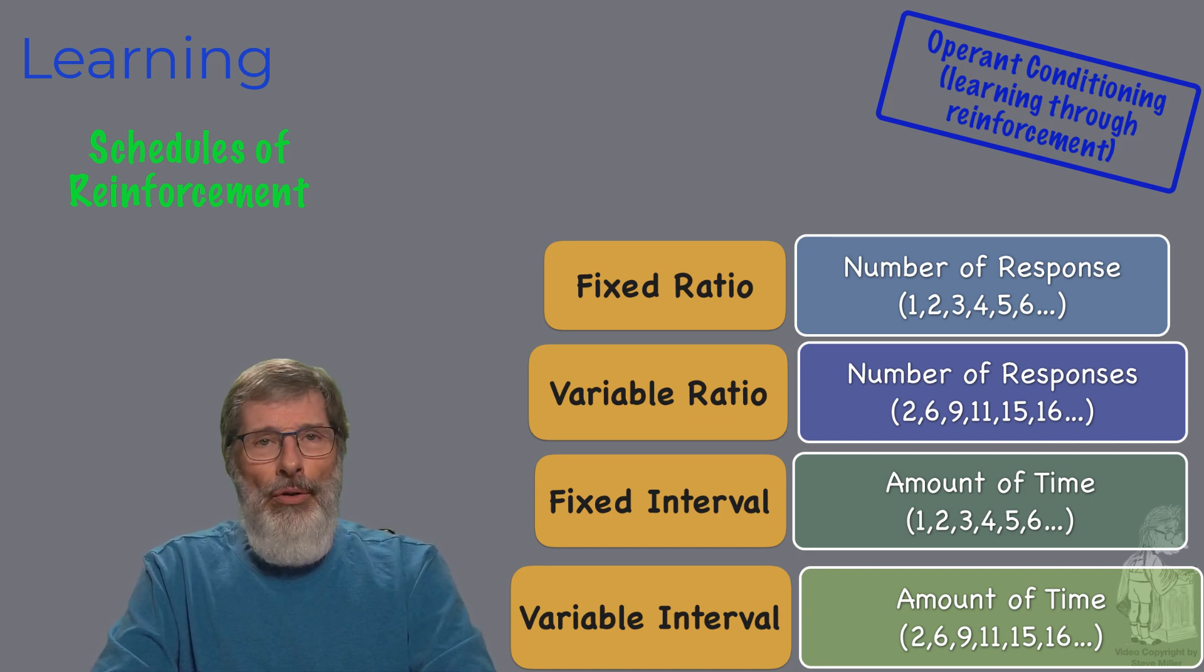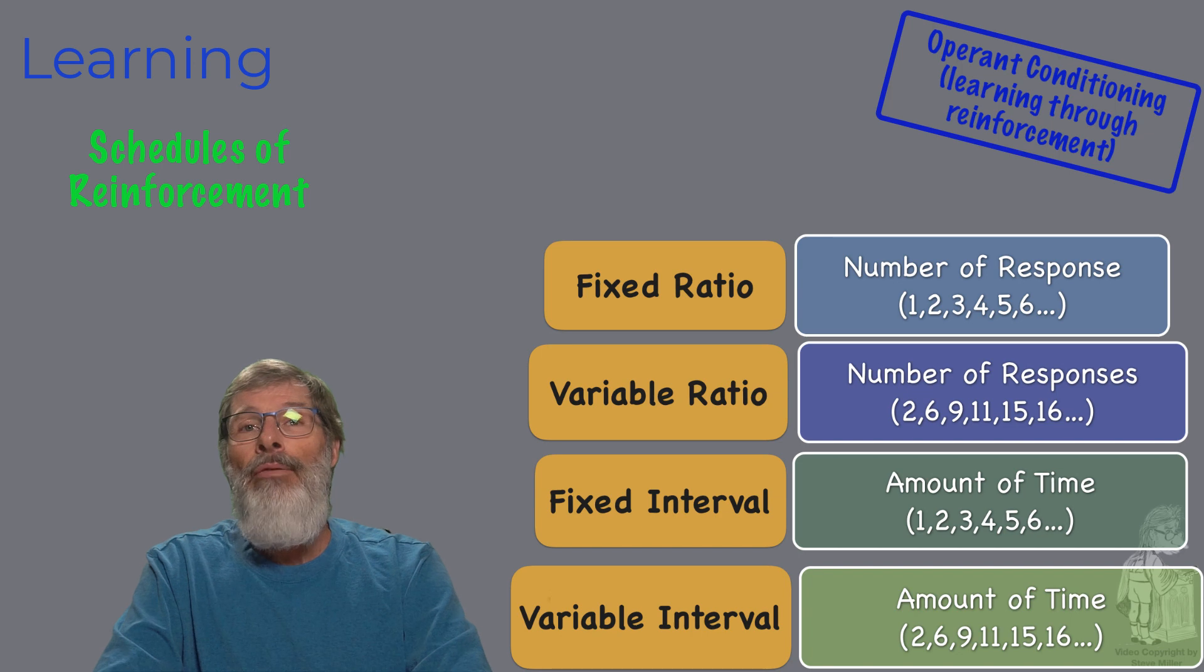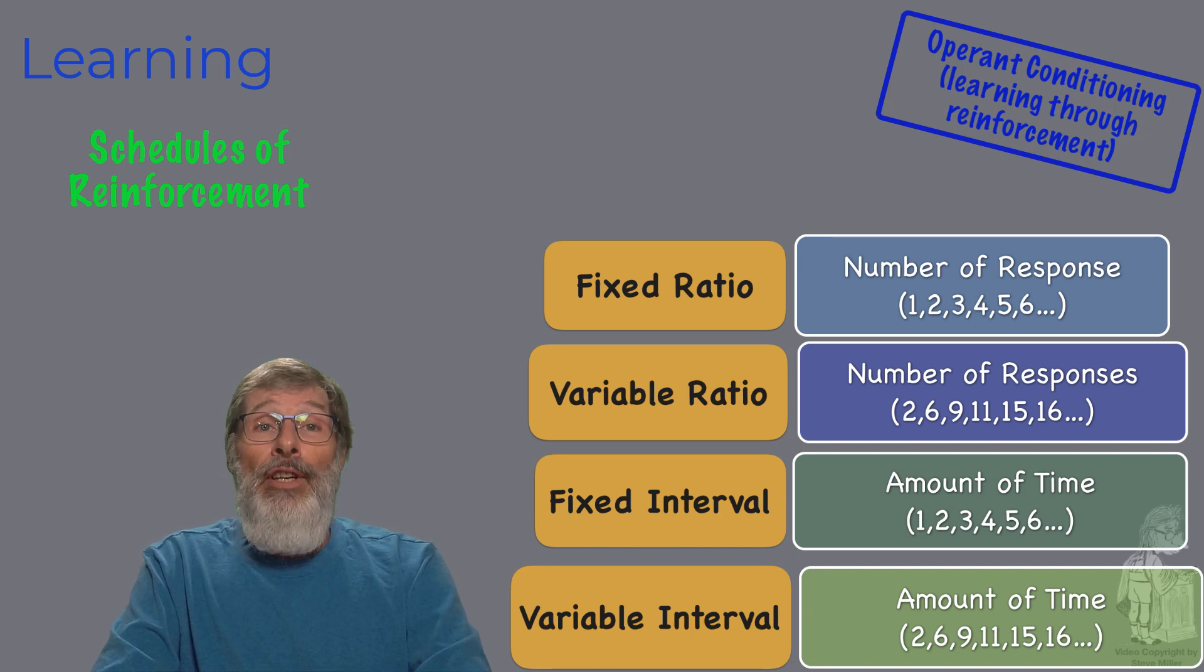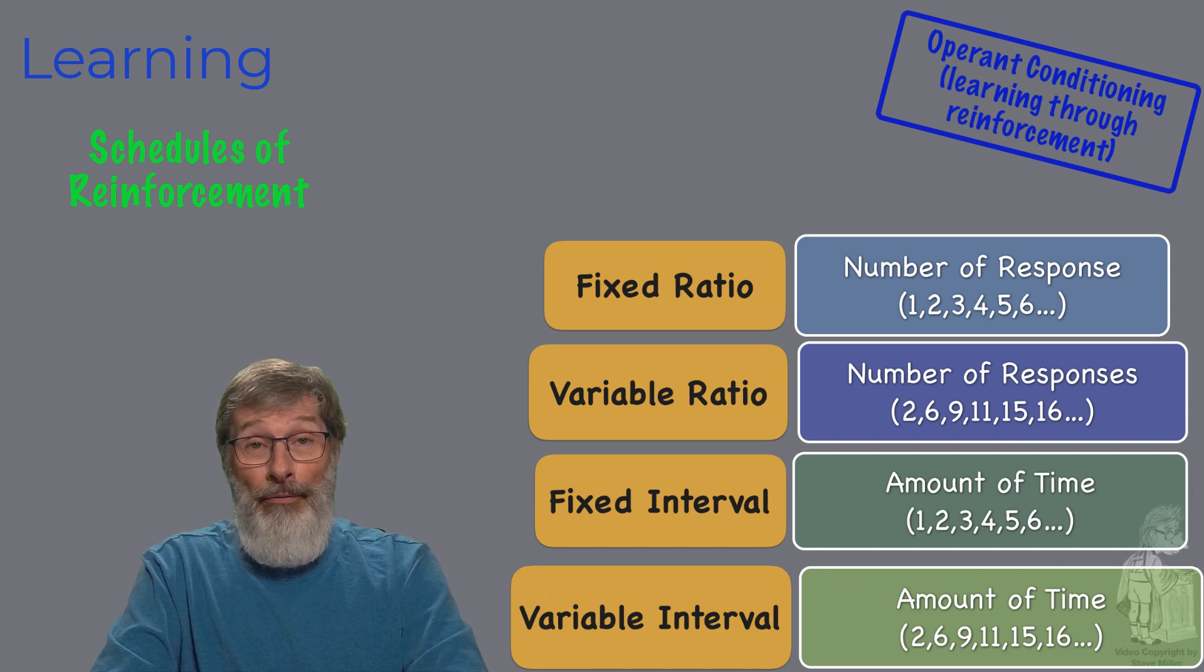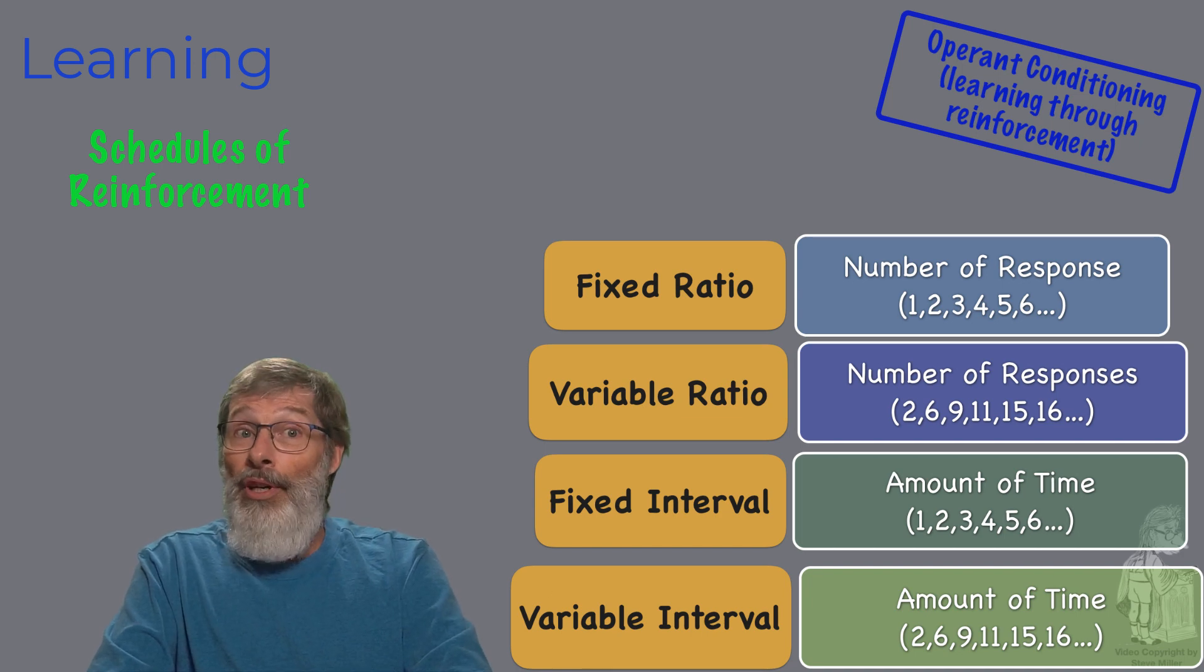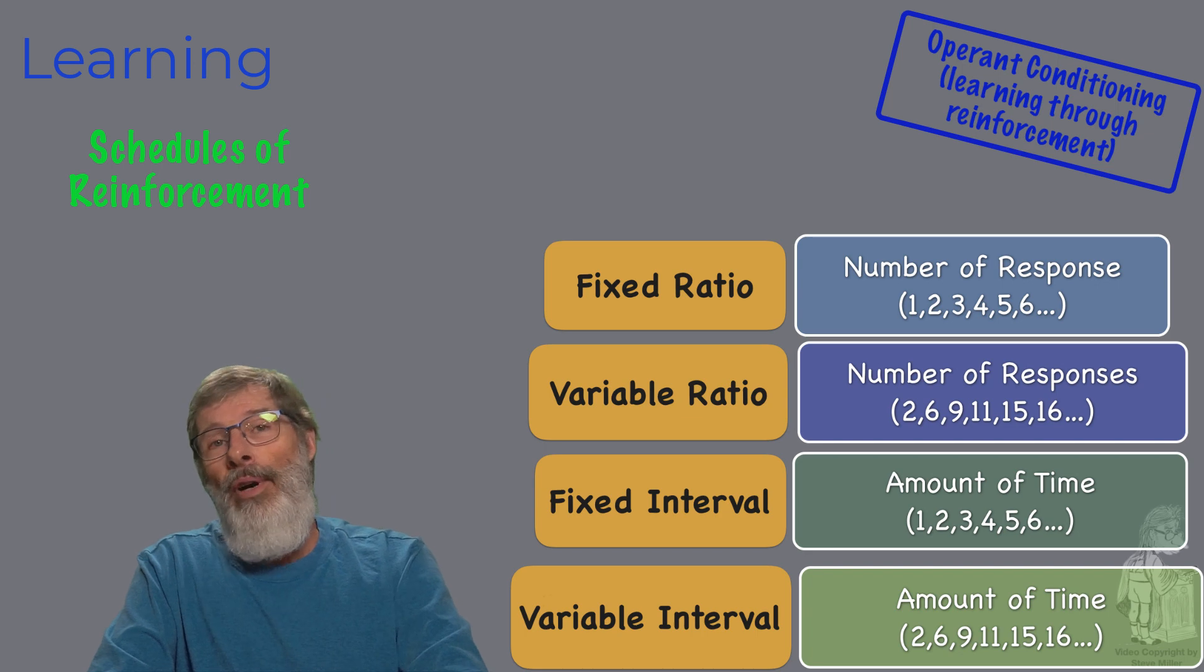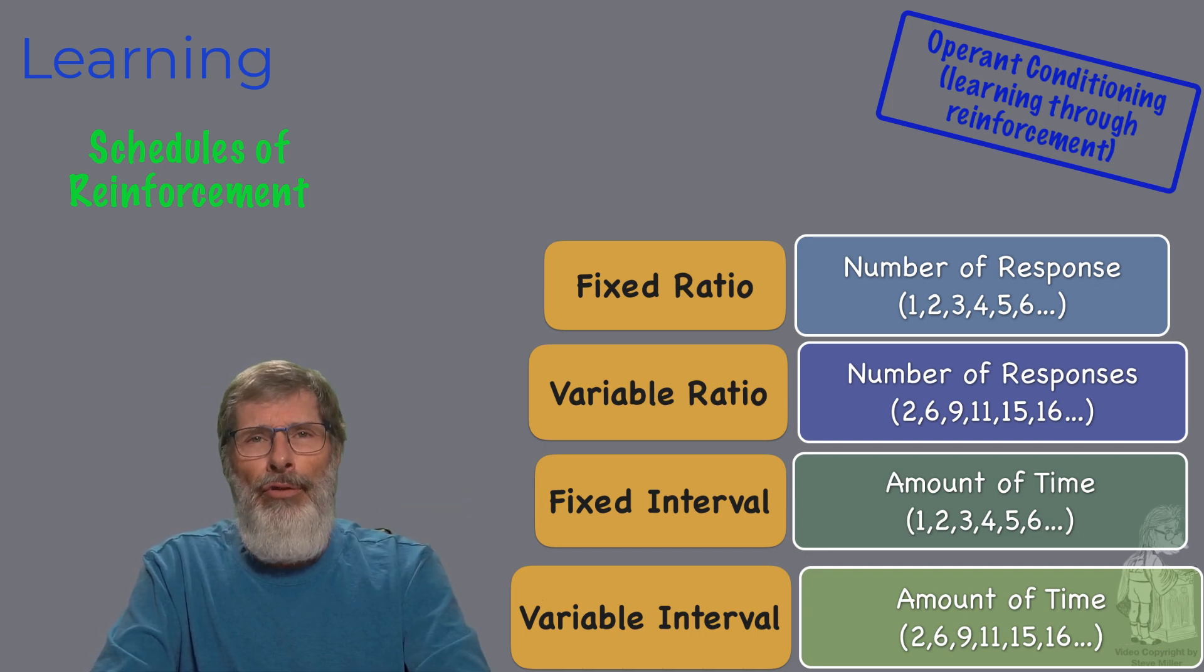Then we get into ratio schedules. Ratio schedules are about numbers. Not the time, but how many times the behavior occurs. Fixed ratio, the reinforcement is provided after a fixed number of correct responses have made. So if I do a fixed ratio of five, every five times I see the behavior that we want to reinforce, I reinforce it only after five times. The variable ratio, the reinforcement is provided after a variable number of correct responses. And you see the diagram beside me to give you some example. Both ratio schedules maintain high rates of responding.